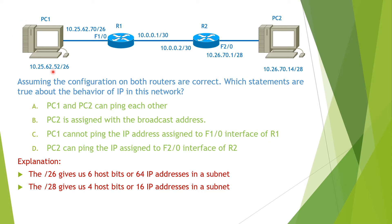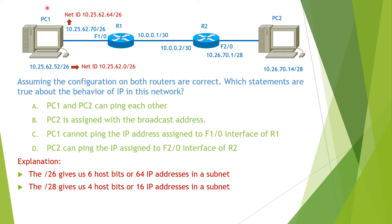Now let's look at this portion of the network. As we can see, the interface F10 of router 1 belongs to the network 10.25.62.64/26. However, PC1 belongs to the network 10.25.62.0/26. So PC1 and the interface F10 of router 1 are not in the same network, so they cannot ping each other.